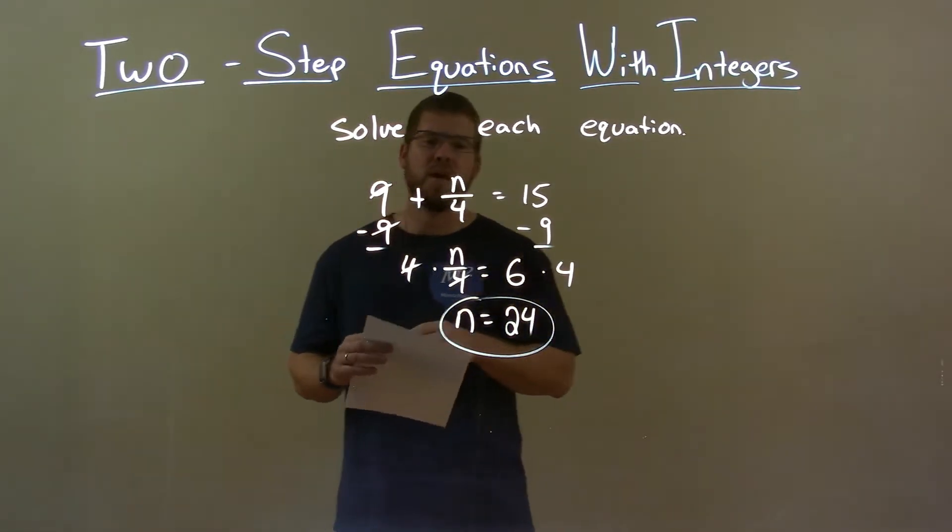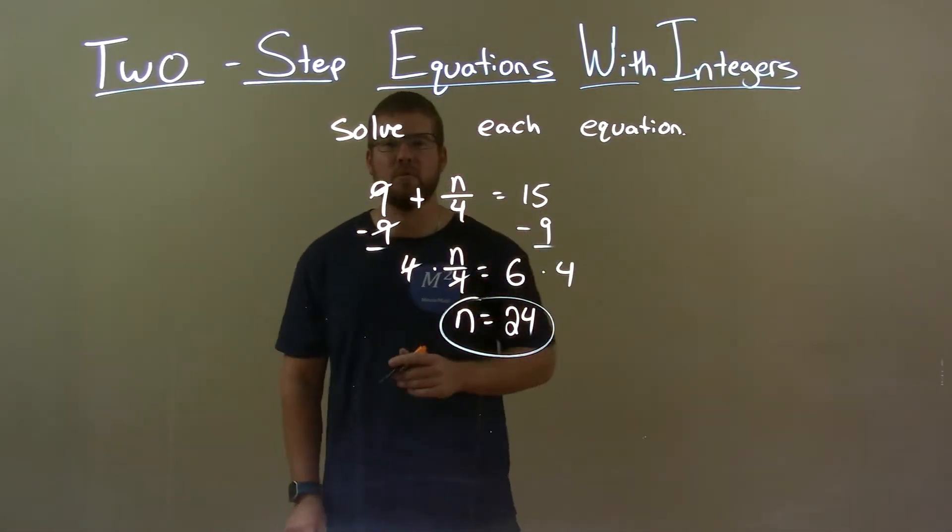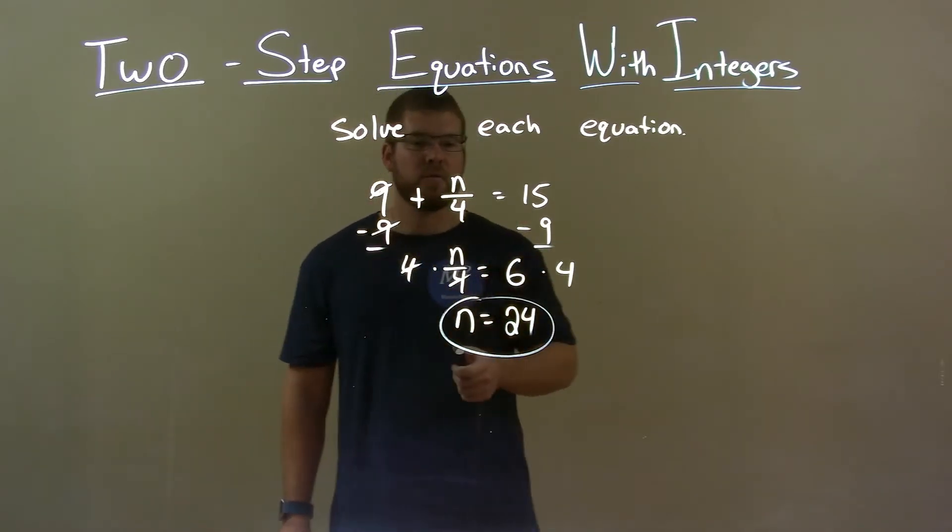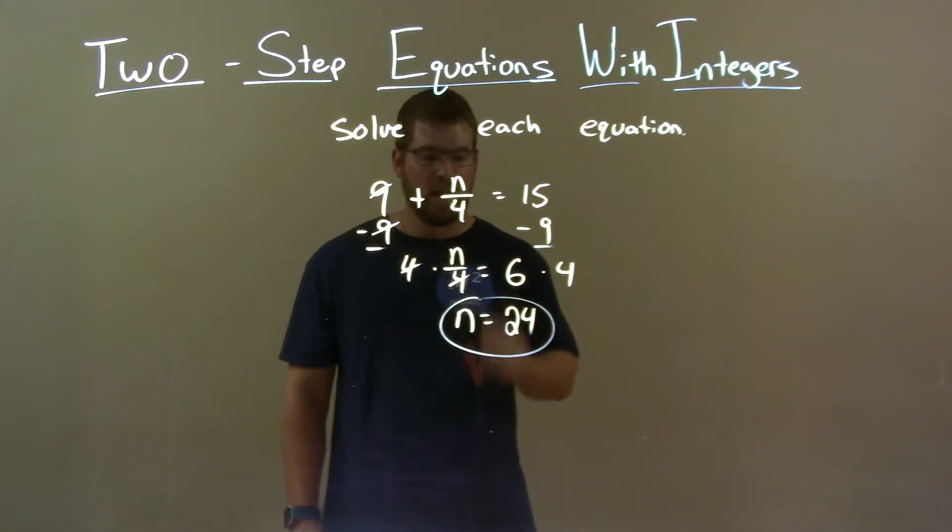Quick recap, we're given 9 plus n over 4 equals 15 and we have to solve for n. So, subtract 9 from both sides, then multiply both sides by 4. That gave me my final answer of n equals 24.